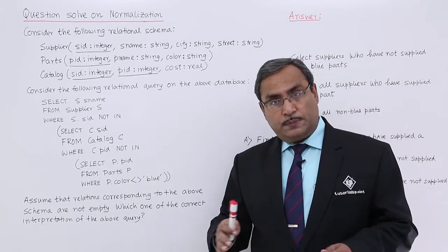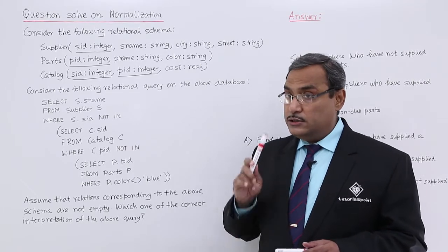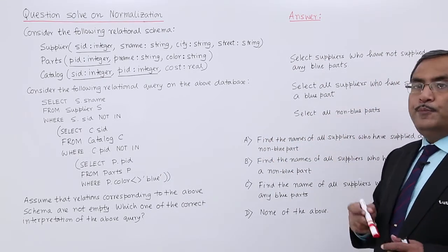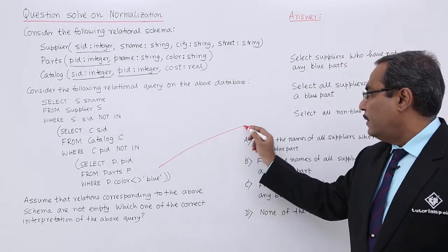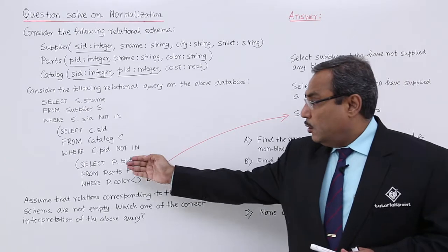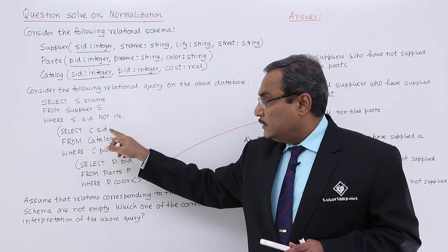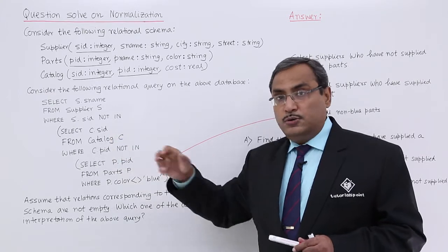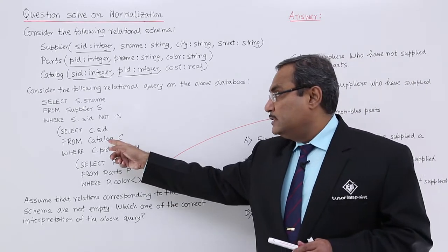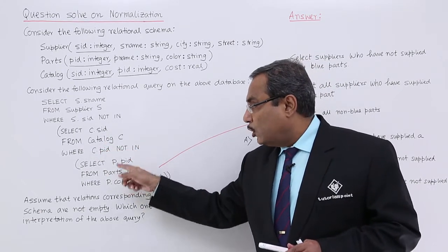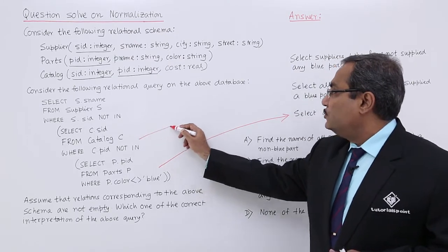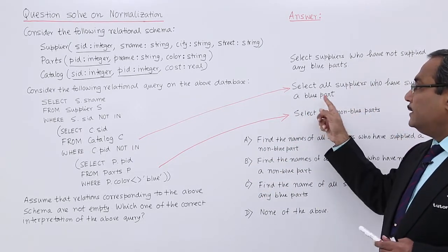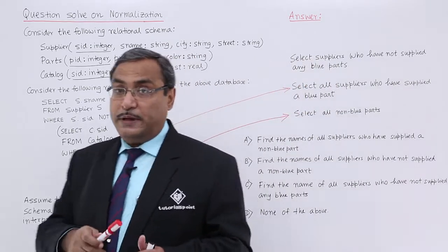The innermost query produces the list of those product IDs whose color is not equal to blue — that means it selects all non-blue parts. Now the middle query executes: SELECT C.SID FROM Catalog C WHERE C.PID NOT IN (that result). This lists supplier IDs from the catalog where the part ID is not in the non-blue parts list.